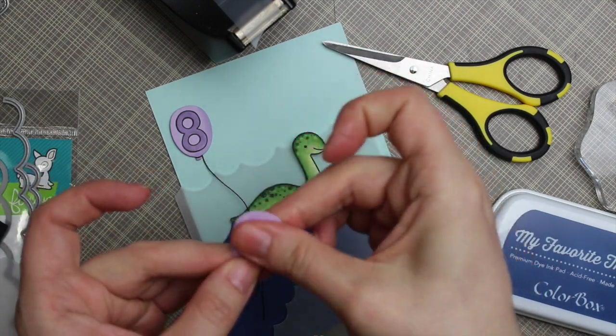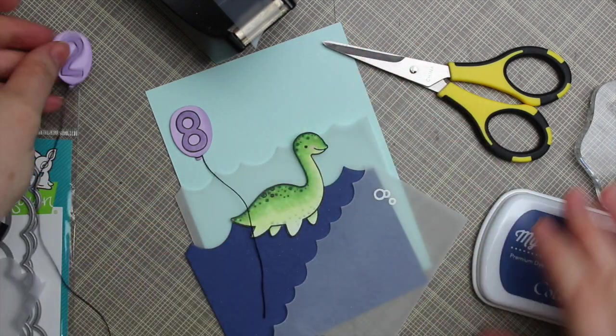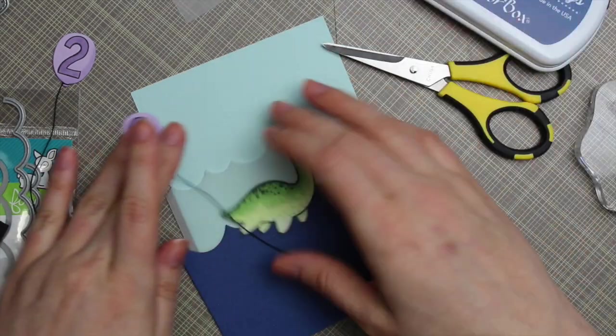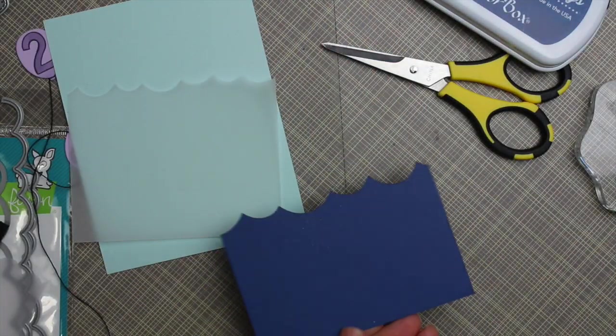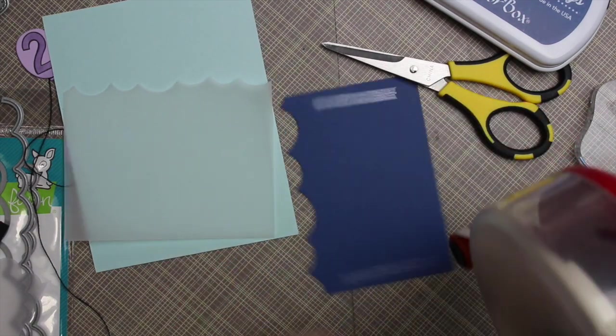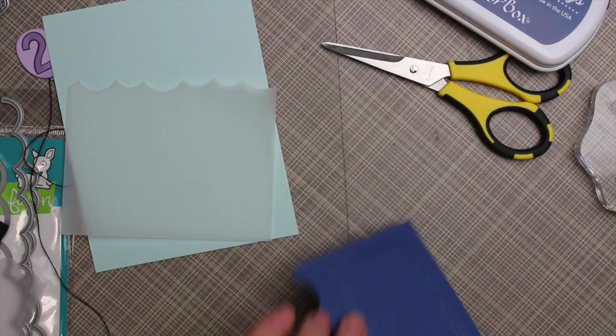And then for the balloons, I've got some kind of heavyweight black thread that I just taped to the back of each balloon and then set those aside so I can go actually building up the scene I've created with all these different die cuts.